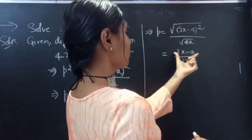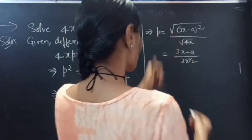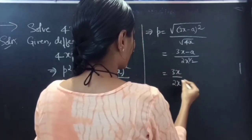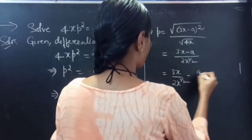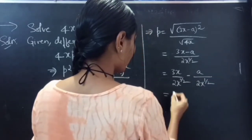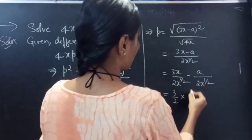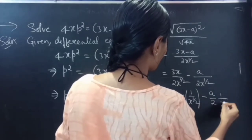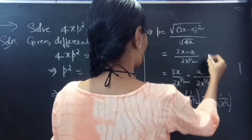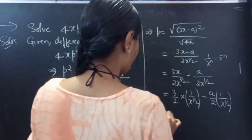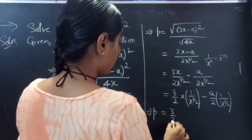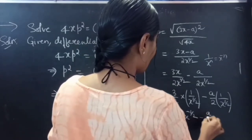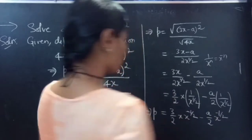Since we have two terms in the numerator and one term in the denominator, we can split the expression into two fractions: 3x divided by 2·x^(1/2) minus a divided by 2·x^(1/2). This gives 3/2 · x · x^(−1/2) minus a/2 · x^(−1/2), using the rule that 1/x^n equals x^(−n).